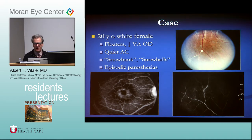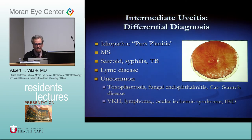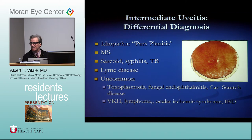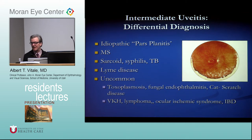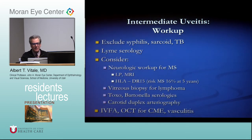Classic findings in intermediate uveitis include vascular cuffing, macular edema, and staining of peripheral retinal vessels. The differential includes idiopathic pars planitis, MS, sarcoid, syphilis, TB, Lyme, and uncommon diseases. In a young woman who is HLA-DR2 positive, the likelihood of developing multiple sclerosis associated with pars planitis is about 15% in five years. Workup: exclude syphilis, sarcoid, and TB; Lyme serology where appropriate; and consider neurologic workup for MS.